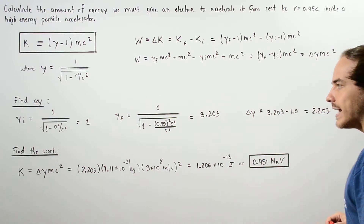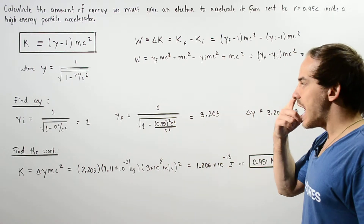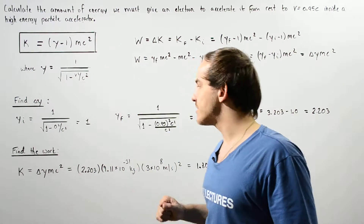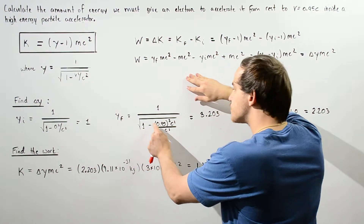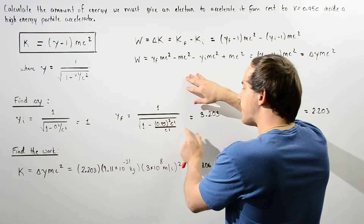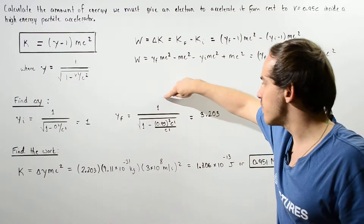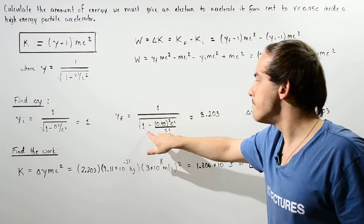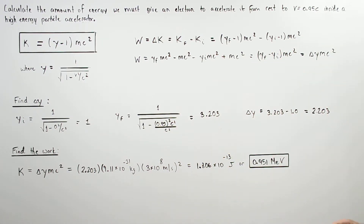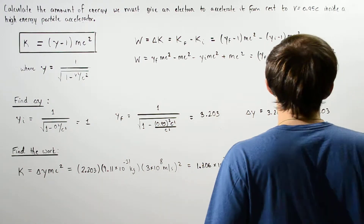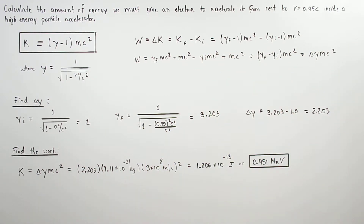Now for gamma final: as the velocity increases, gamma increases as well. So we have 1 divided by the square root of 1 minus 0.95 squared times c squared divided by c squared. The c squared terms cancel, and plugging into our calculator — 1 divided by the square root of 1 minus 0.95 squared — we get about 3.203. So delta gamma is 3.203 minus 1, which equals 2.203.